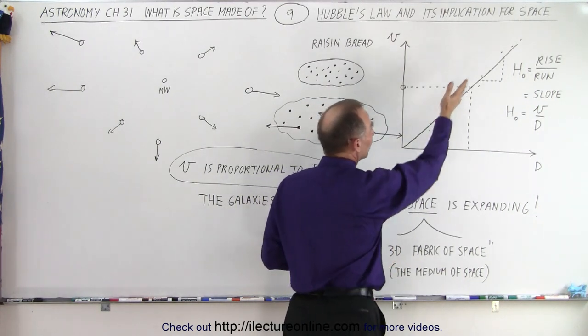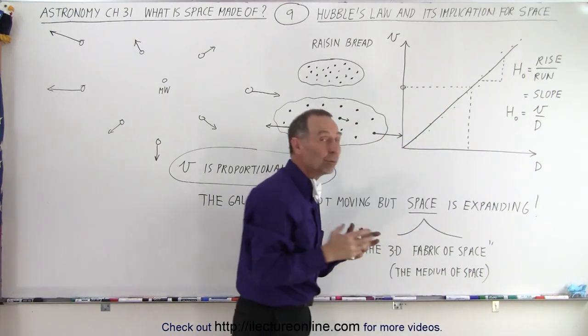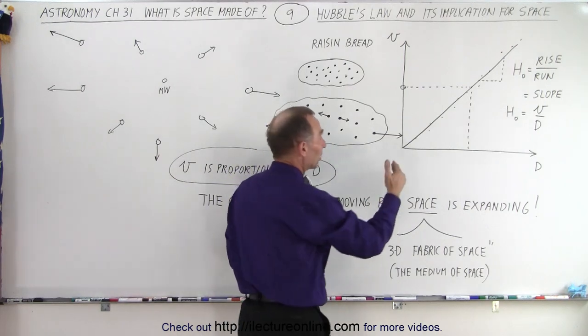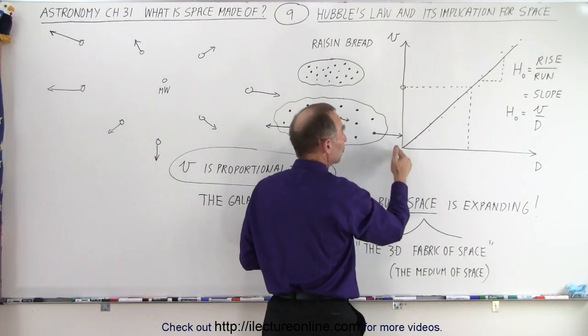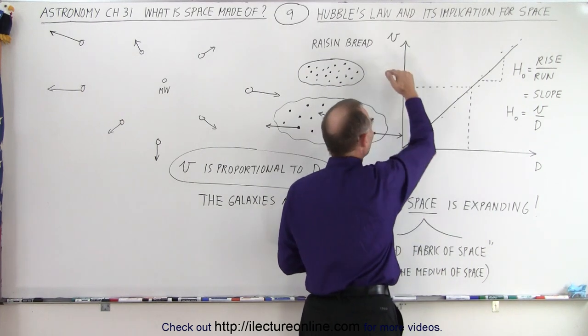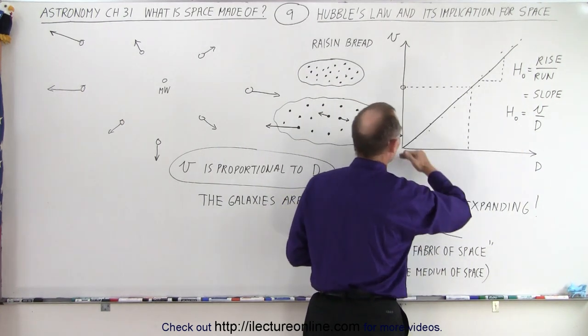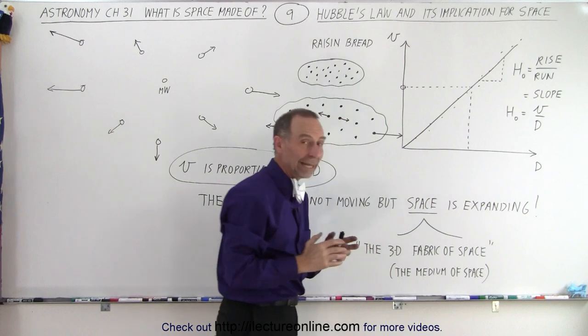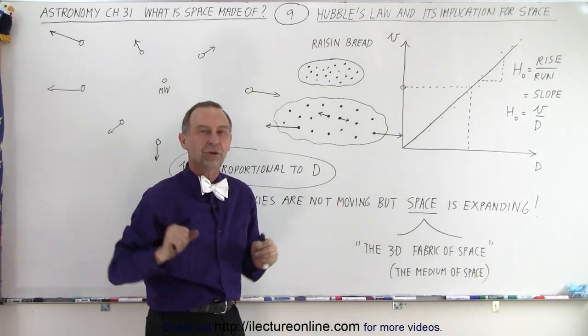And he found that when he plotted them on a graph, he found a linear relationship. In other words, a galaxy that was twice as far away was moving twice as fast, one that was three times as far away was moving three times as fast, and so forth. And that seemed to be the case for the entire universe.